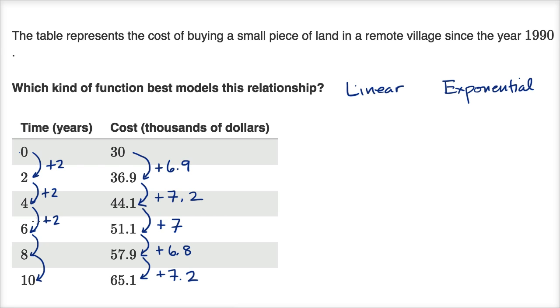But every time we add two years, it does look like we're getting pretty close to adding $7,000 in cost. 6.9 is pretty close to seven. That's pretty close to seven. That is seven. That's pretty close to seven. That's pretty close to seven. So this is looking like a linear model to me.